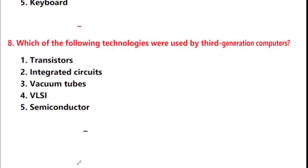Next question: which of the following technologies were used by third generation computers? Options: transistors, integrated circuits, vacuum tubes, VLSI, semiconductor. Answer is option 2: integrated circuits.